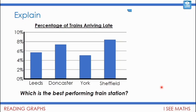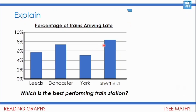Which is the best performing train station? This graph shows the percentage of trains that arrive late at each station. It might seem like Sheffield is best because its bar is biggest — but wait, this shows trains arriving late. We don't want trains arriving late, so actually the best station is the one with the smallest bar — the lowest percentage of late arrivals. We have to read this graph slightly differently.